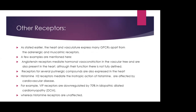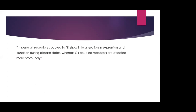The heart and vasculature express many other G-protein family receptors apart from adrenergic and muscarinic receptors. Examples include angiotensin receptors, which mediate hormonal vasoconstriction in the vascular tree and are also present in the heart. Histamine H2 receptors mediate the inotropic action of histamine and are affected by cardiovascular disease. VIP receptors are downregulated in 70% of the population with idiopathic dilated cardiomyopathy, whereas histamine receptors are unaffected. In general, receptors coupled to GI (inhibitory) show little alteration in expression and function, whereas GS-coupled receptors (i.e., beta receptors) are affected more profoundly.